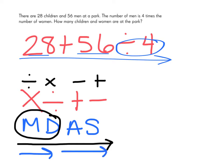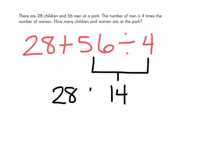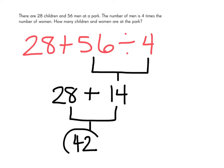So let's solve this problem following My Dear Aunt Sally. My Dear Aunt Sally says we have to divide before we add. So 56 divided by 4 equals 14. Our next number expression is 28 plus 14. 28 plus 14 is 42. So the number of women and children at the park will be 42.